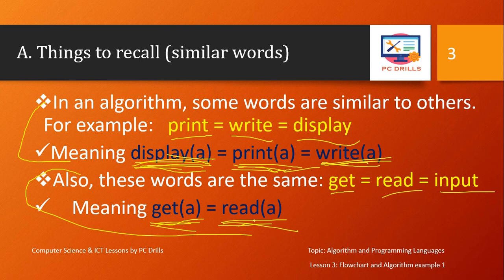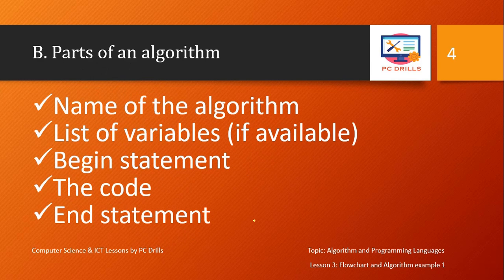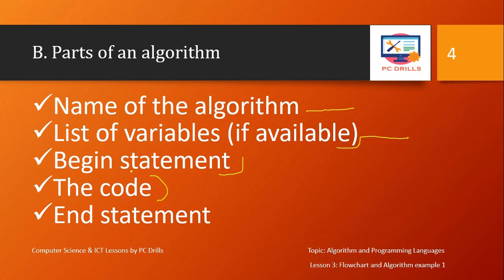Now let's move on to the parts of an algorithm. For parts of an algorithm you have: the name of the algorithm as the first part, second is a list of variables — generally if you don't have variables you can omit this. Next you have the begin statement, then all the code of your program in between, and finally the end statement.